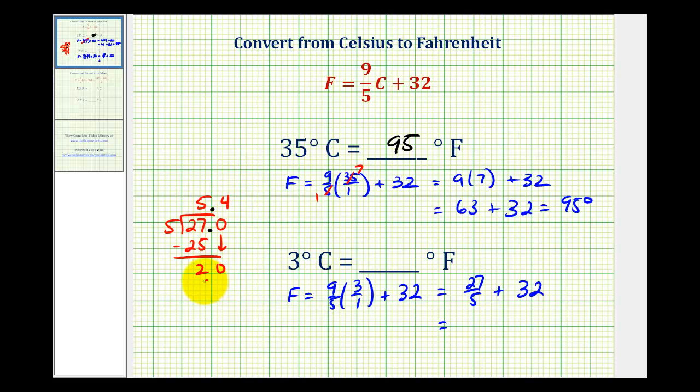Four times five is 20, and now the remainder is zero, so 27 fifths equals 5.4.